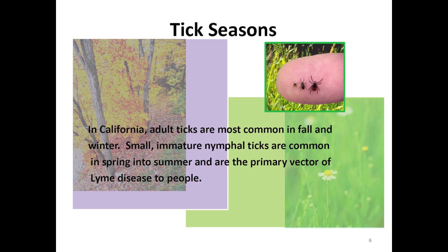In California, you are most likely to see adult ticks in the fall and winter. The small immature nymphal ticks are common in the spring and summer. Nymphs are the primary vector of Lyme disease to people.